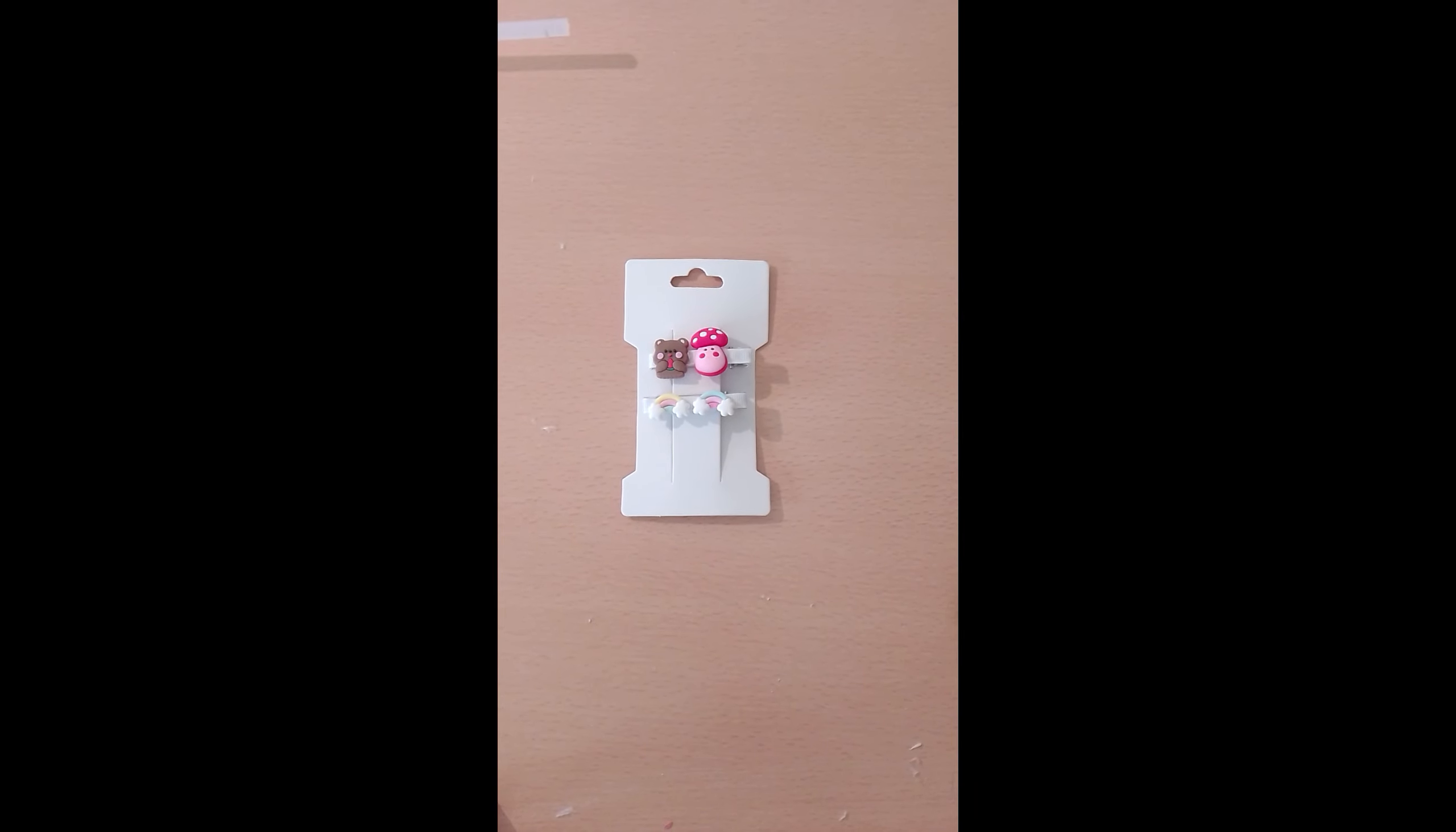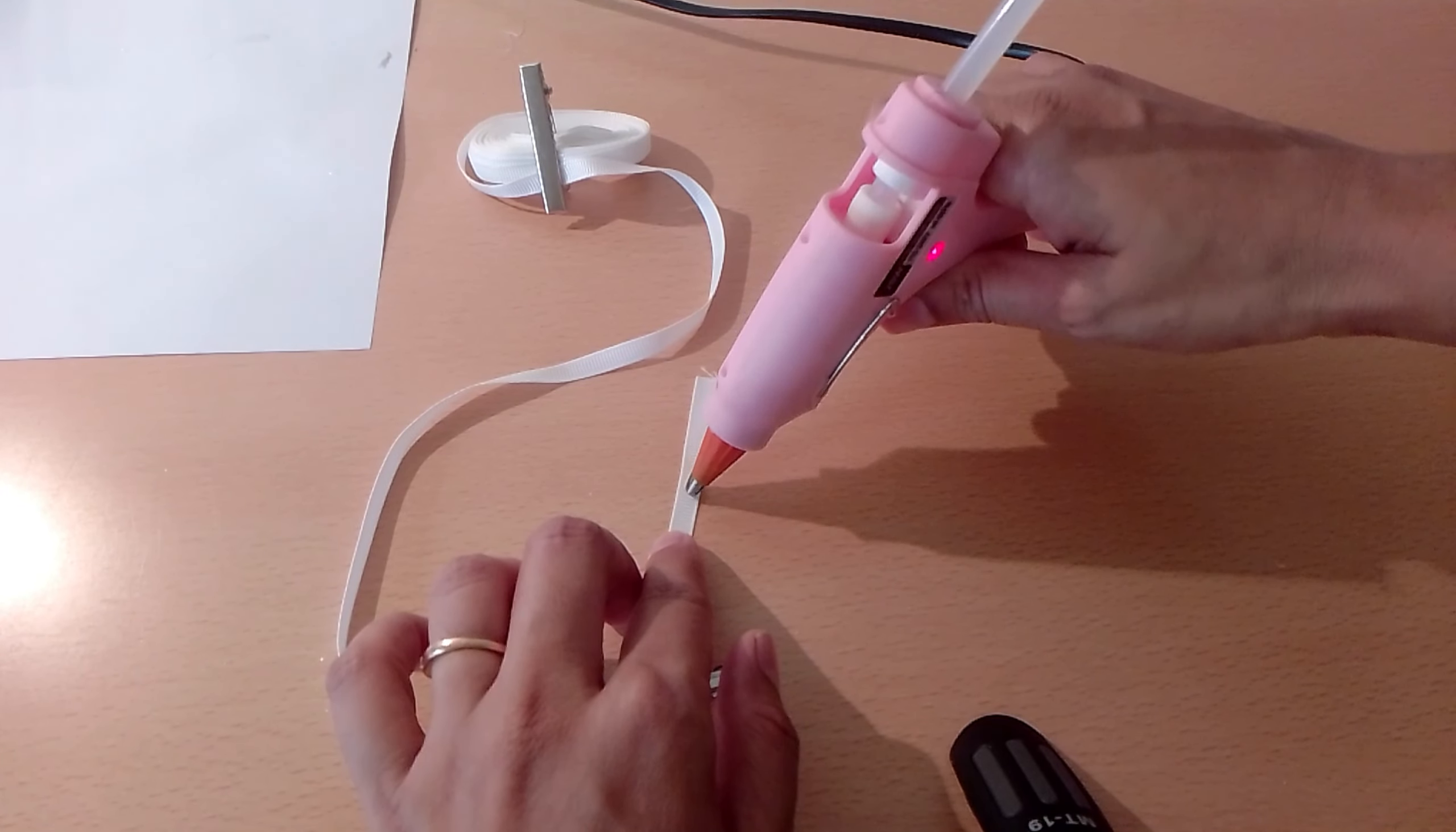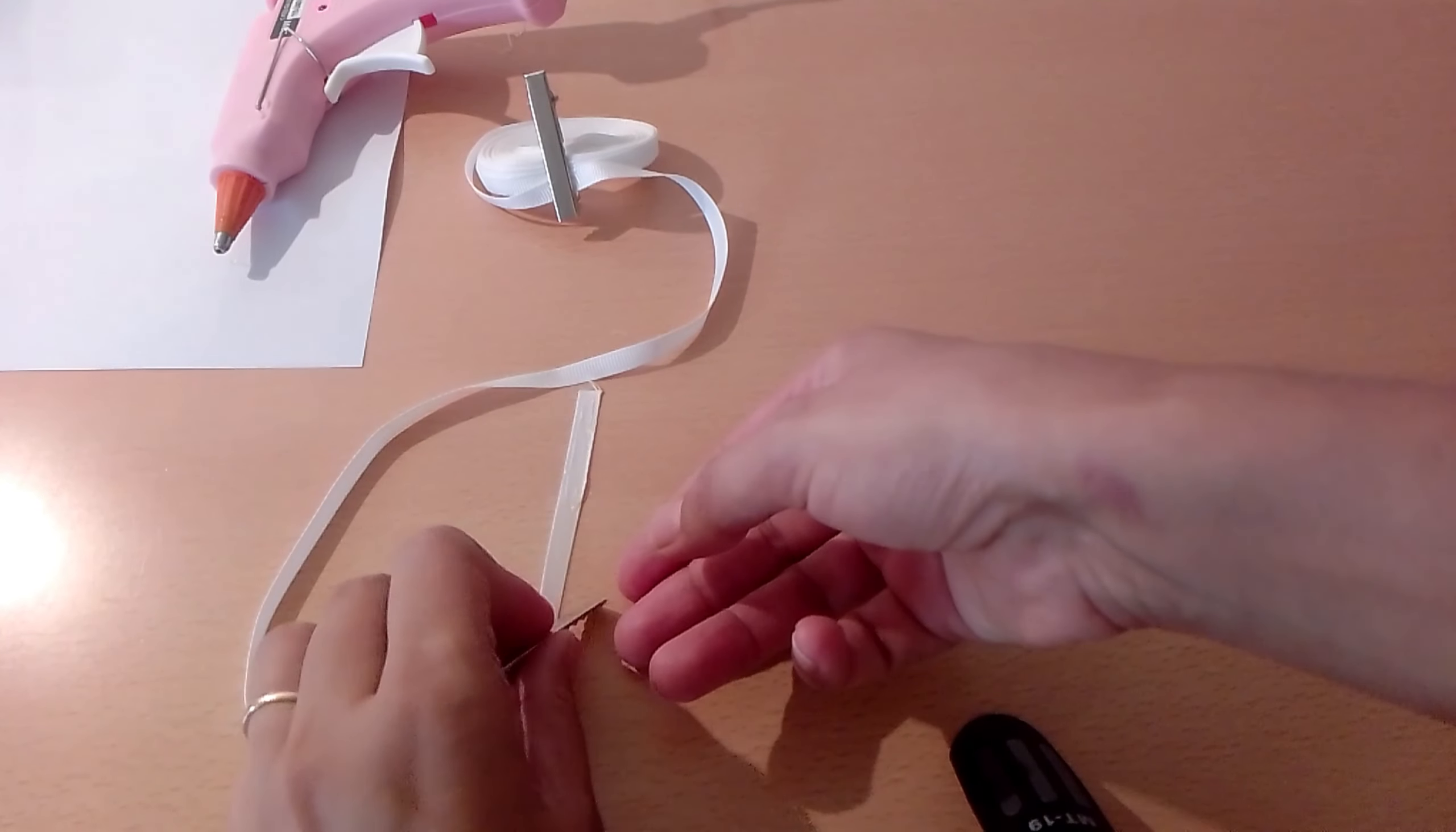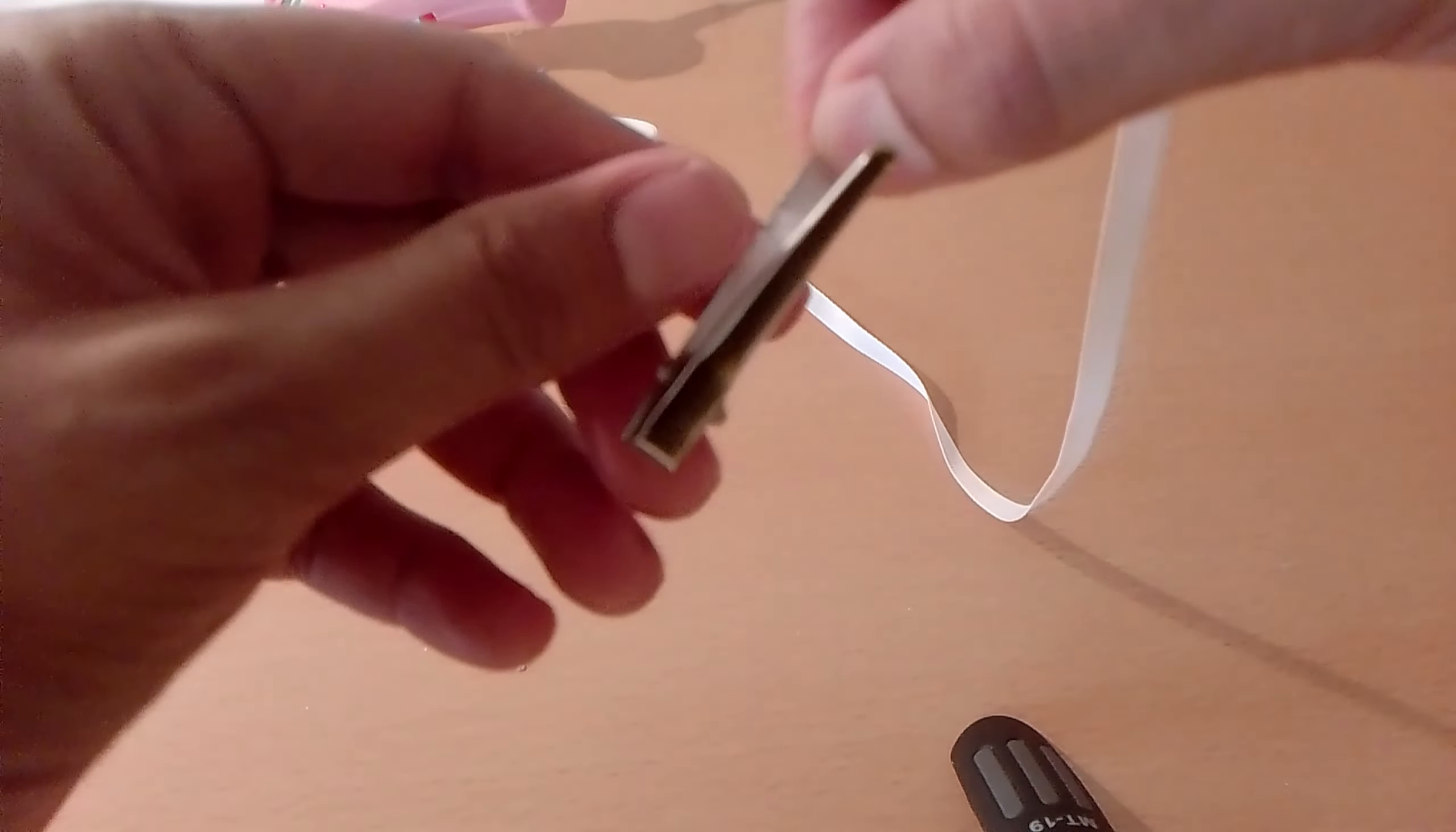Hello, in this video you will learn how to make cute hair clips at home like this. For this, you need alligator clip, ribbon, and rubber stickers. First, we will line the alligator clip with the help of glue and ribbon.